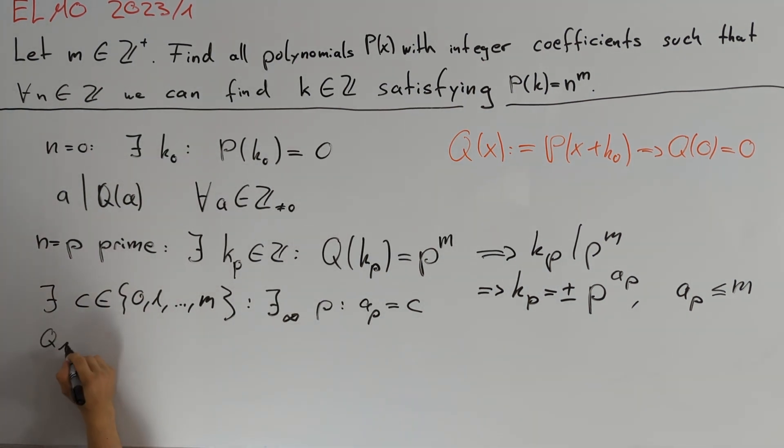Here we can define the polynomial Q₁ to be equal to Q(x)^c minus x to the power of m.